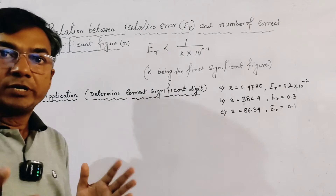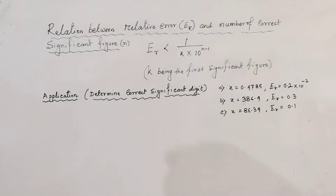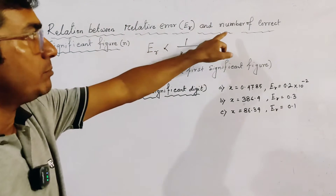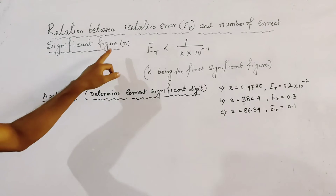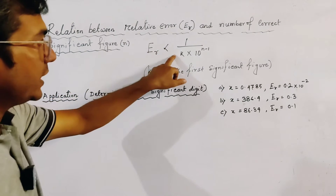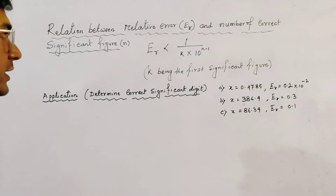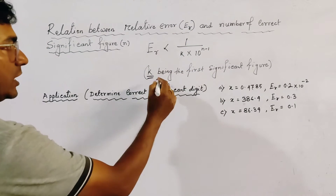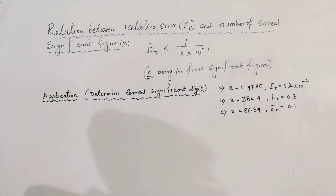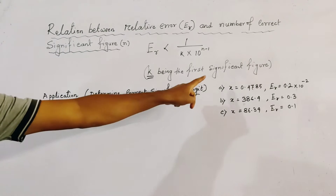This is an important relation in numerical analysis: the relation between relative error er and the number of correct significant figures n. The relative error er is always less than 1 divided by k times 10 to the power n minus 1, where k is the first significant figure of the number. We will apply this formula using 3 examples.